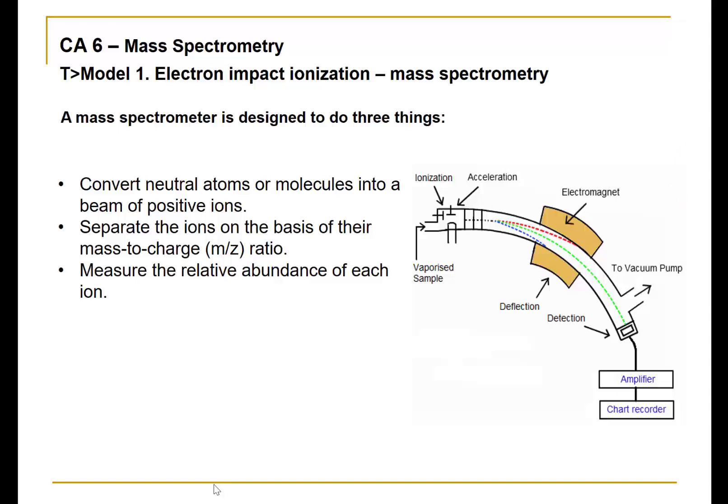Note that the tunnel is curved, so that if nothing else happens, the cations would simply strike the curved wall of the tunnel. But what does happen is a variable magnetic field is applied, which can deflect the cations towards the detector.